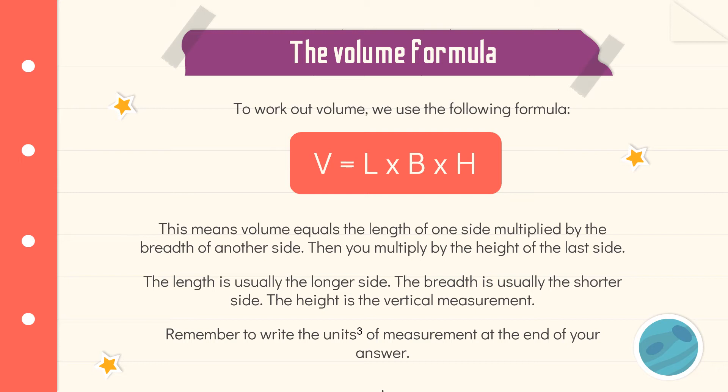Remember to write units cubed at the end of your answer. So that little three over there, we call it cubed. And when we're talking about area, you would write the units squared, which is a little two. So because you are now timesing three numbers together, you have to put a little three after your centimeters or meters or whatever units of measurement you're working with.